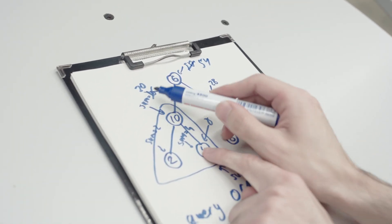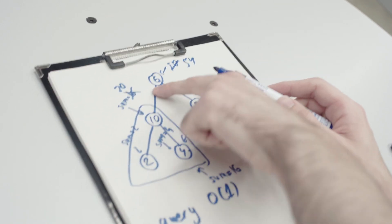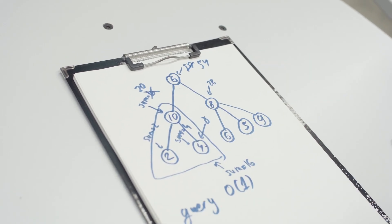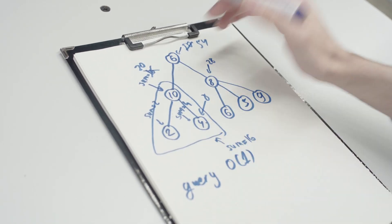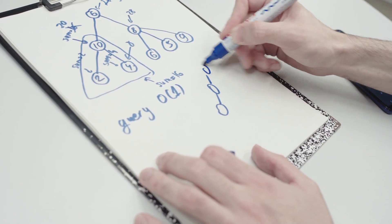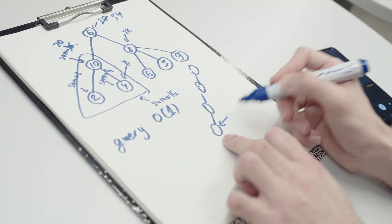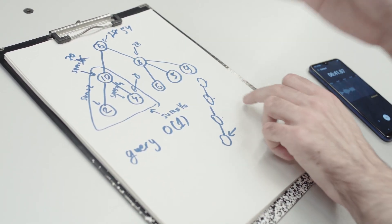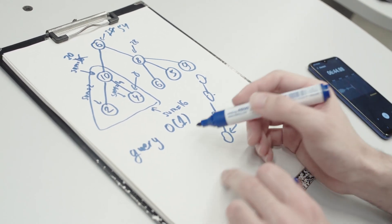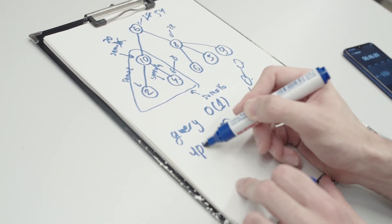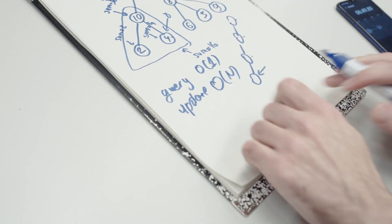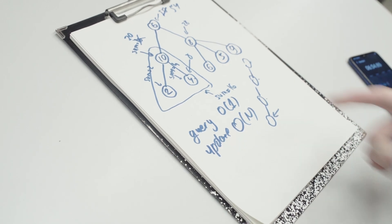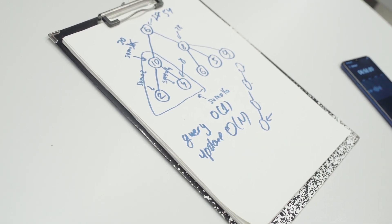There's a propagation: you change one node and now multiple sums change. In the worst case, if you have a chain-like tree and you change the bottom node, all subtree sums change. So update is O(n) because at most n nodes can change with one update.